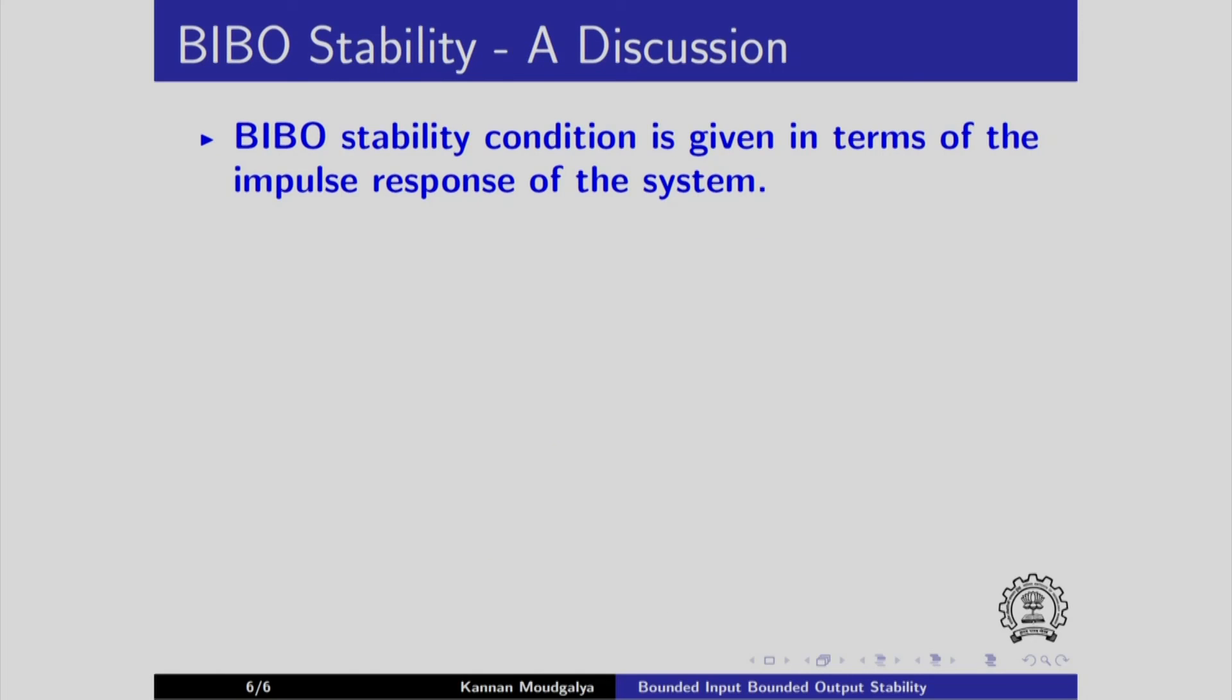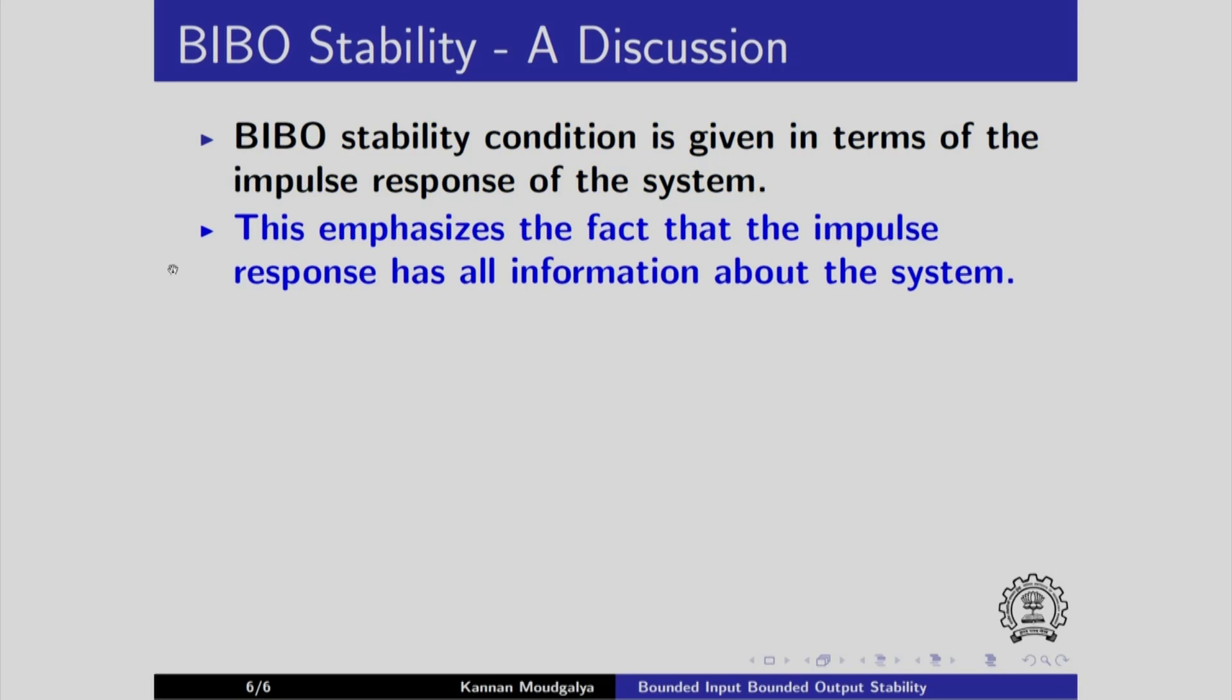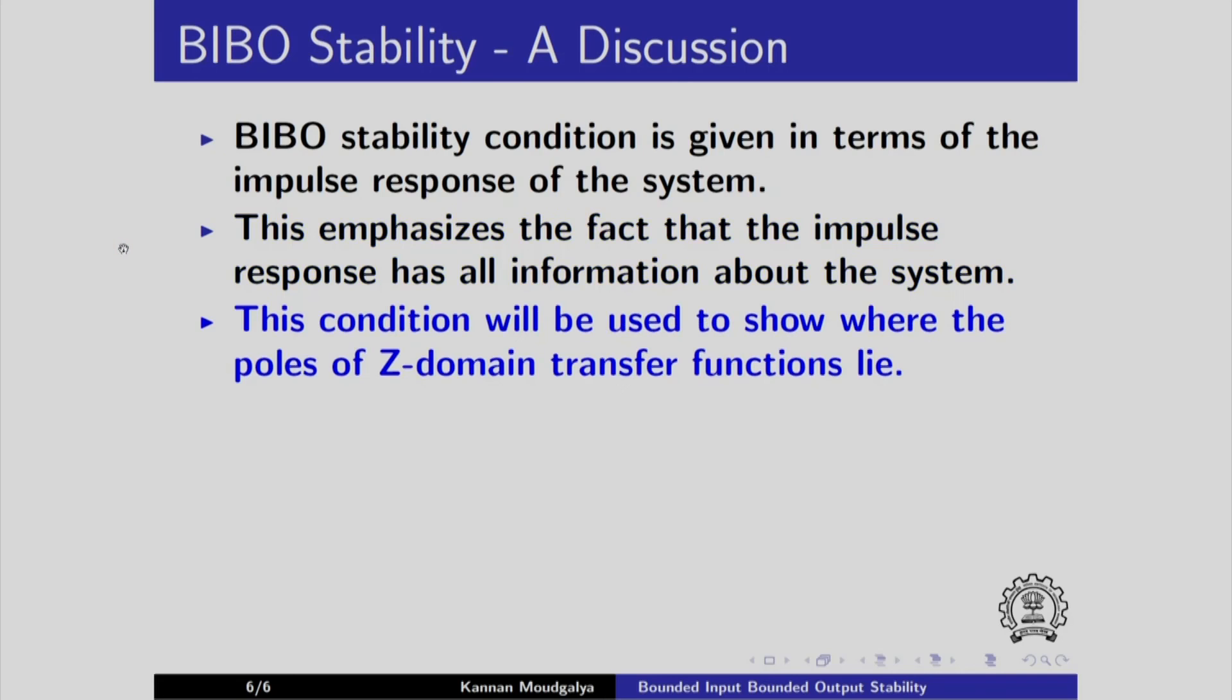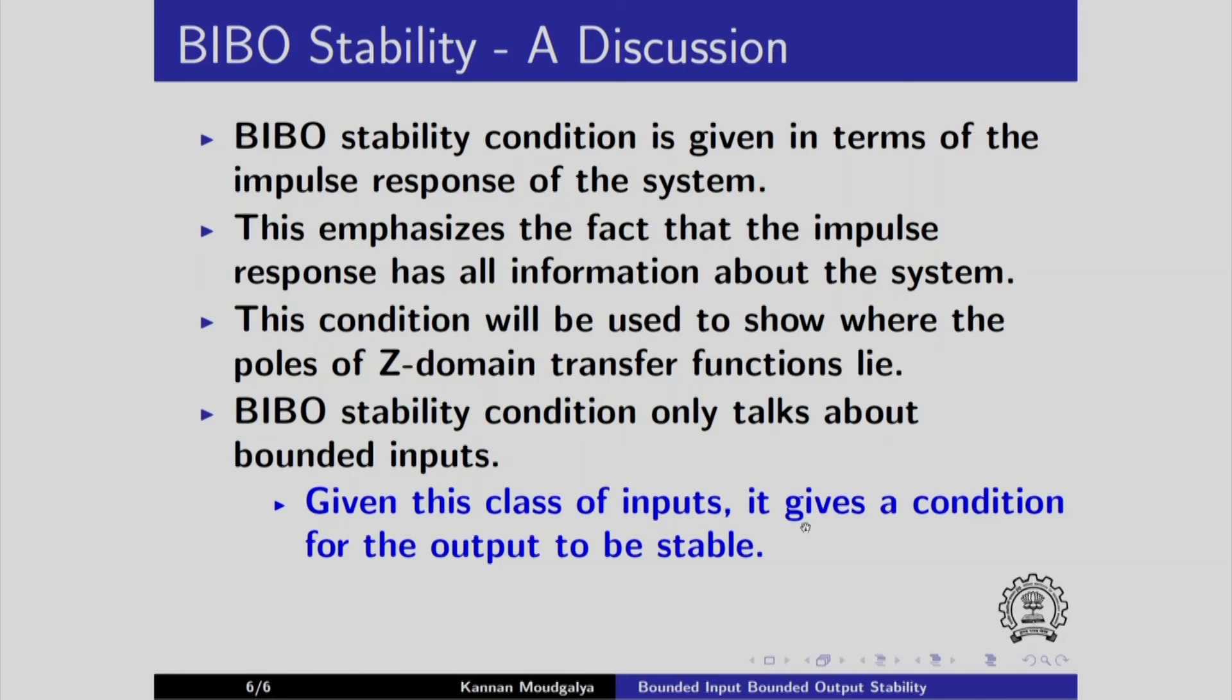We will now point out the importance of this result. BIBO stability condition is given in terms of the impulse response of the system. This emphasizes the fact that the impulse response has all information about the system. We will use this condition later on to show where the poles of z-domain transfer functions lie, especially when the system is stable or unstable and so on. Remember BIBO stability condition only talks about bounded inputs. Given this class of inputs, it gives a condition for the output to be stable, namely the absolute sum of the impulse response to be bounded.